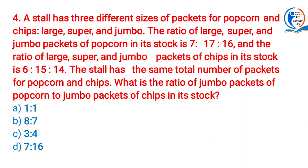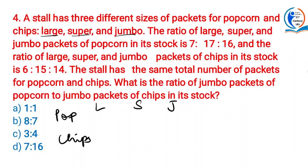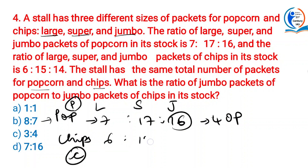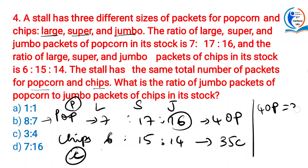A stall has three different sizes of packets of popcorn and chips: large, super, and jumbo. The ratio of large, super, and jumbo packets of popcorn stock is 7 to 17 to 16. The ratio of large, super, and jumbo packets of chips is 6 to 15 to 14. The total number of chips packets and popcorn packets are the same. Total chips packets: 6C + 15C + 14C = 35C. Total popcorn packets: 7P + 17P + 16P = 40P. So 40P = 35C.